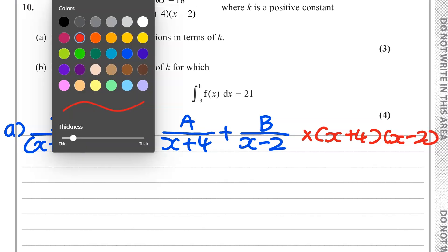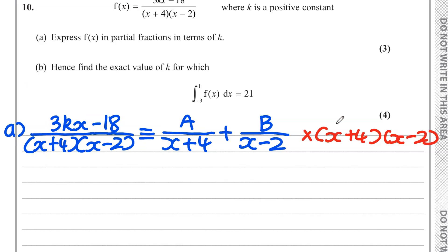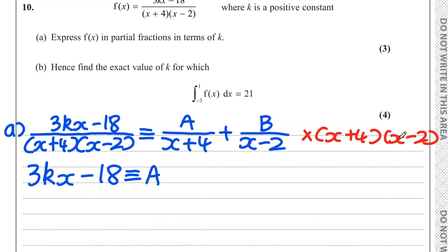If we multiply A/(x + 4) by both brackets, the (x + 4) bracket cancels the denominator, leaving us with A multiplied by the other bracket, (x − 2). If we multiply B/(x − 2) by both brackets, the (x − 2) bracket cancels with its denominator, leaving us with B multiplied by the other bracket, (x + 4). So we have: 3kx − 18 = A(x − 2) + B(x + 4).